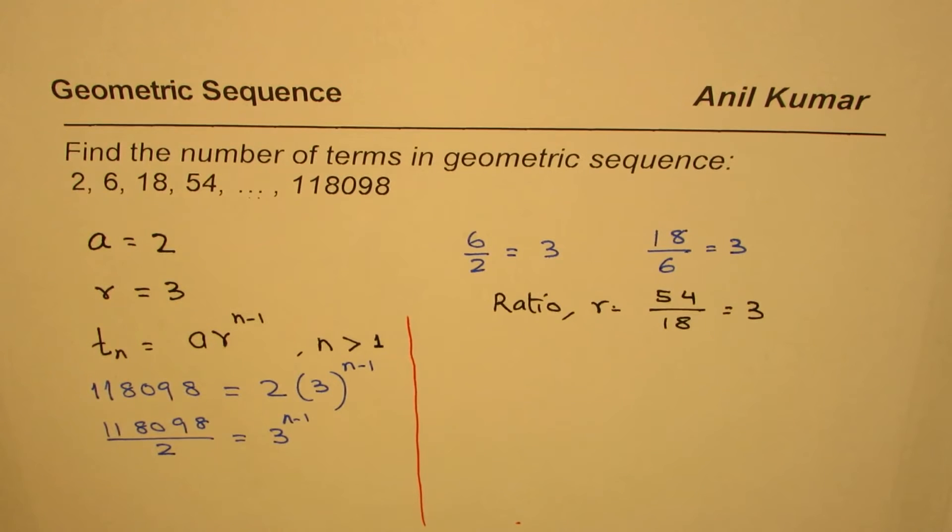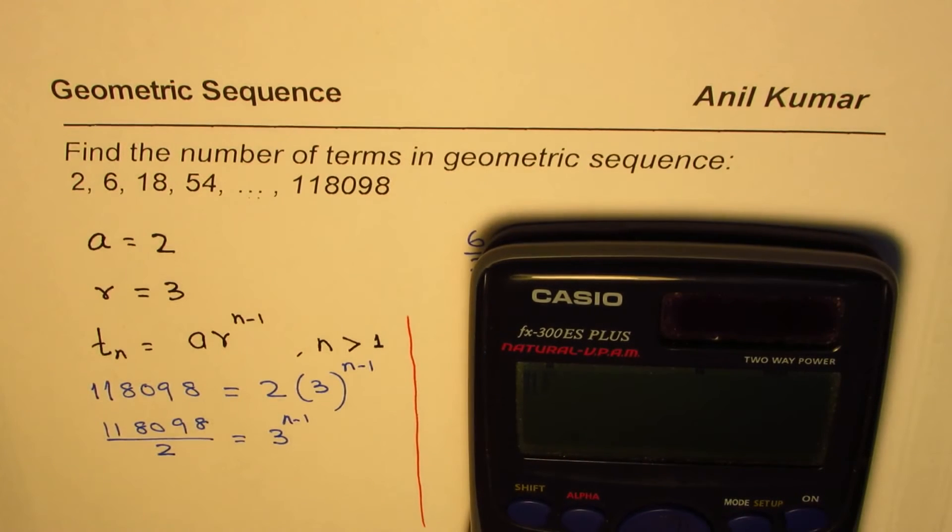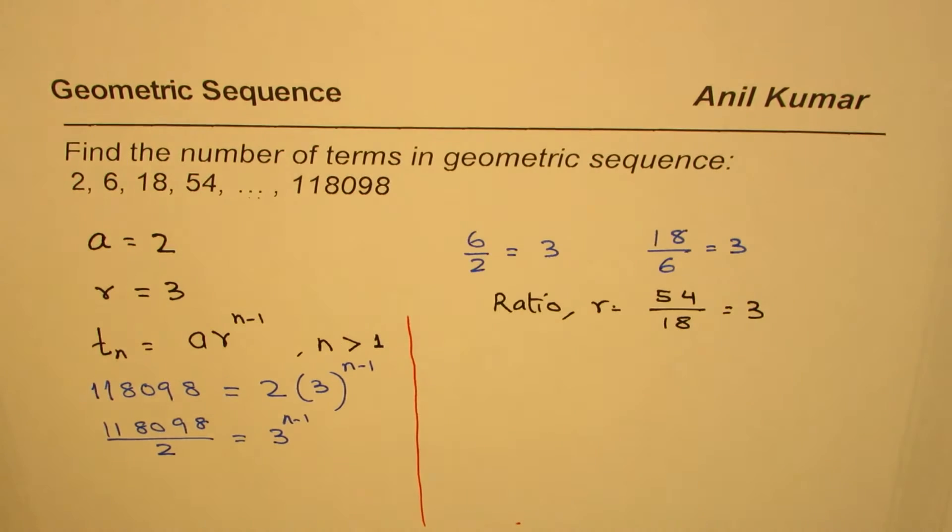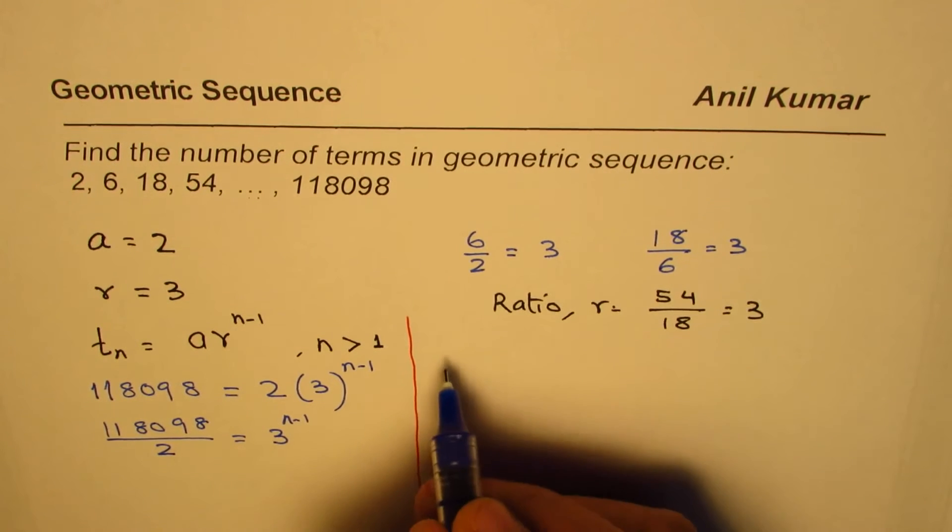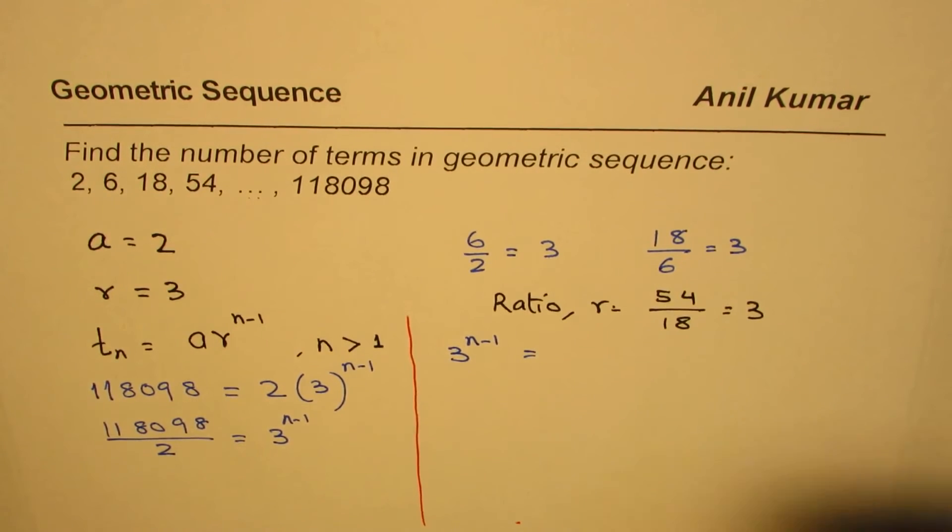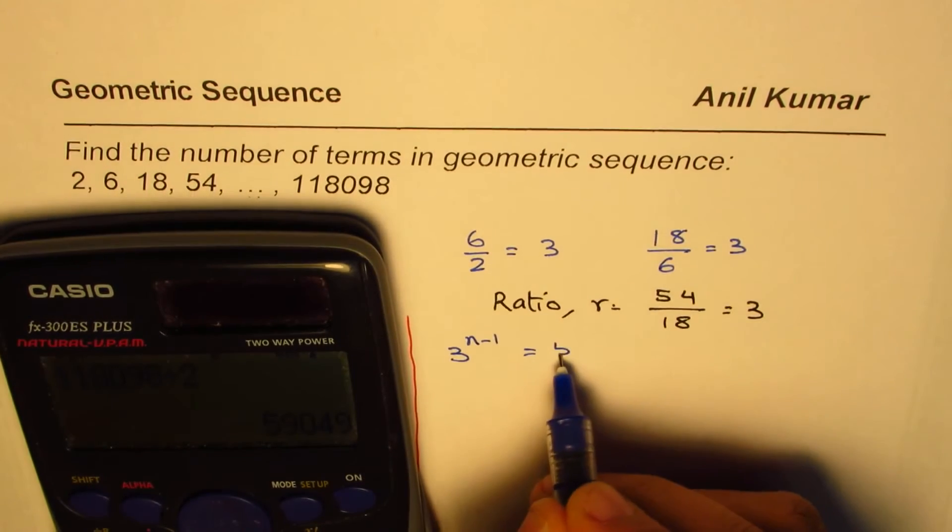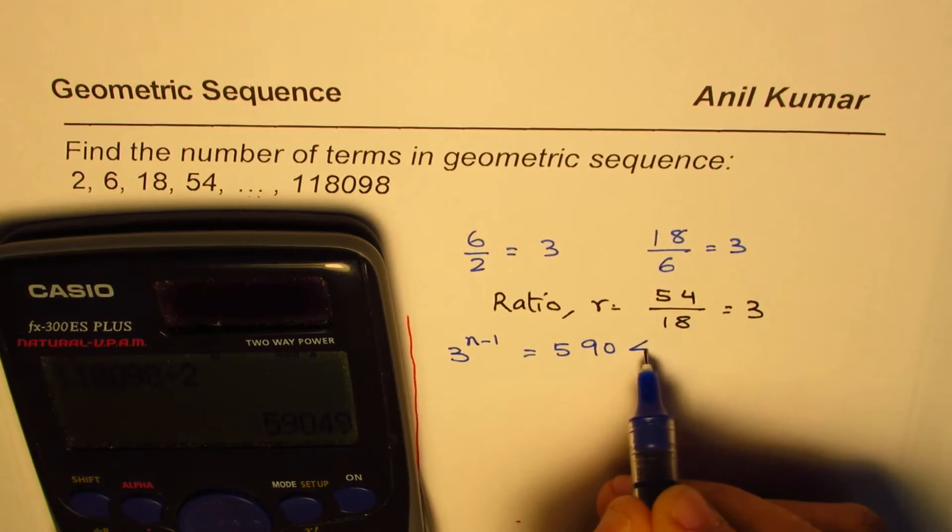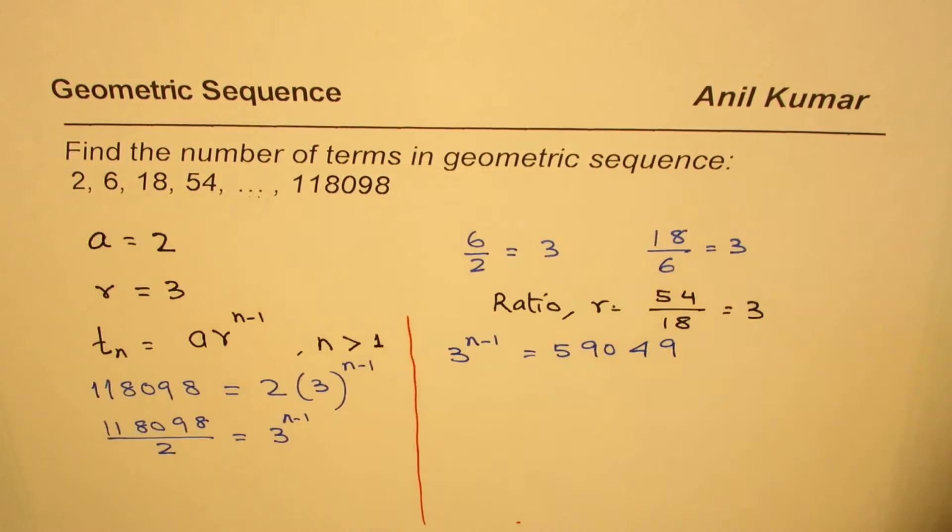Let me first divide and rewrite the equation. We have 118098 divided by 2, half of that is 59049. So the equation which we need to work with is 3 to the power of n minus 1 is equal to 59049.